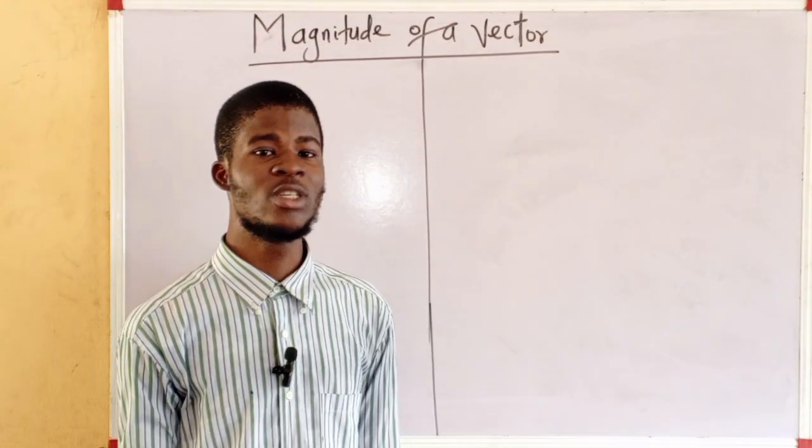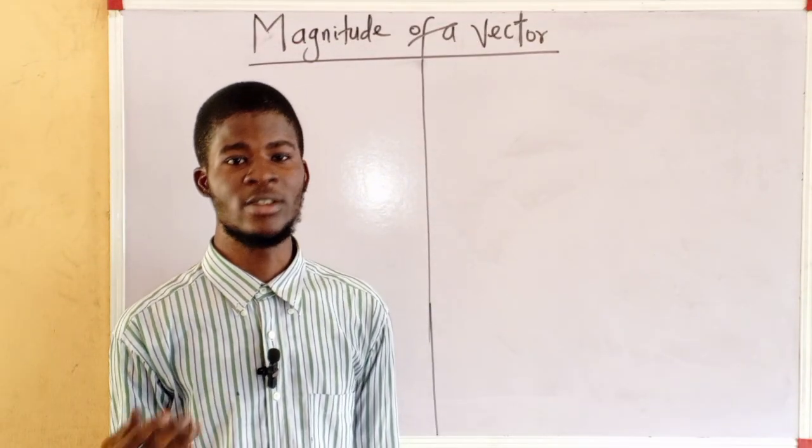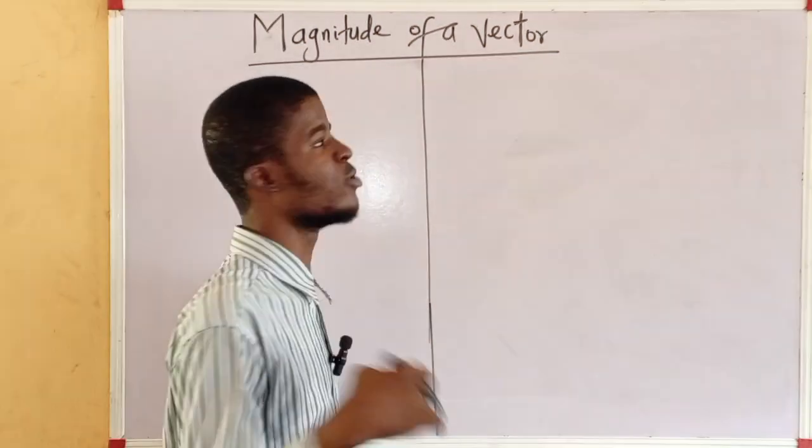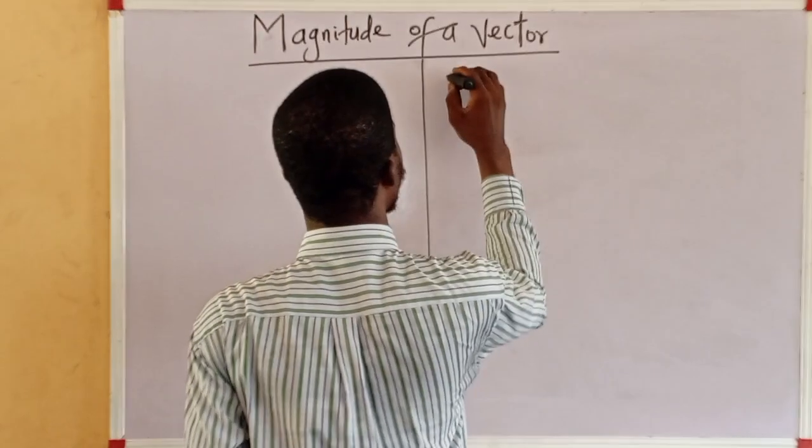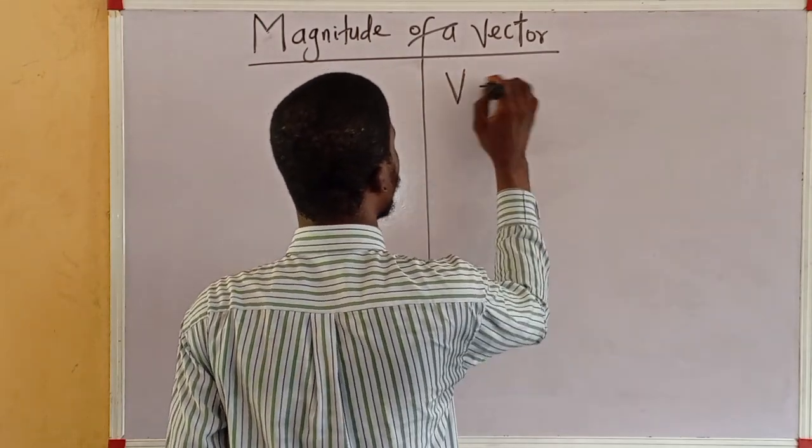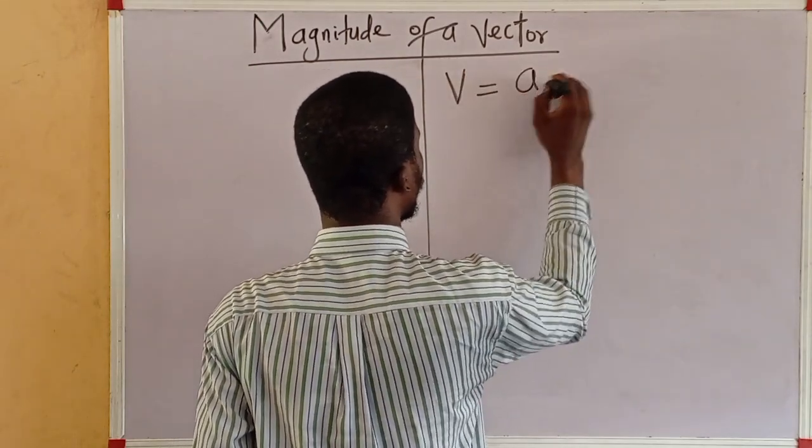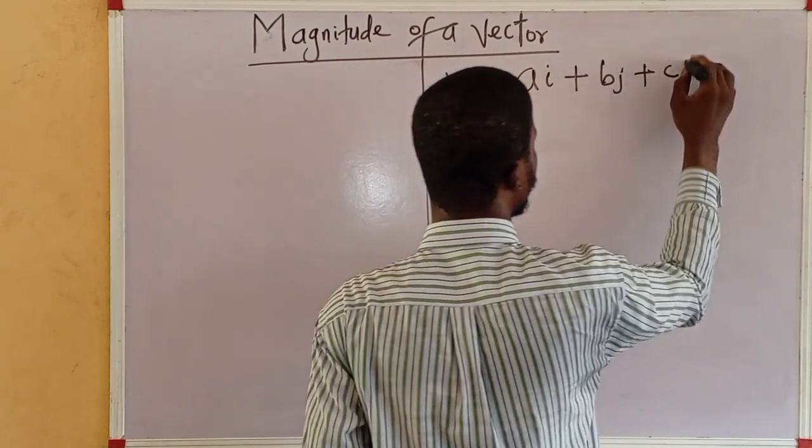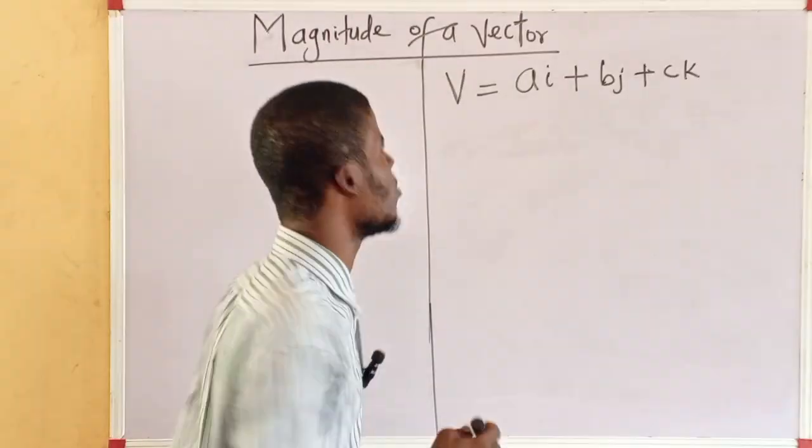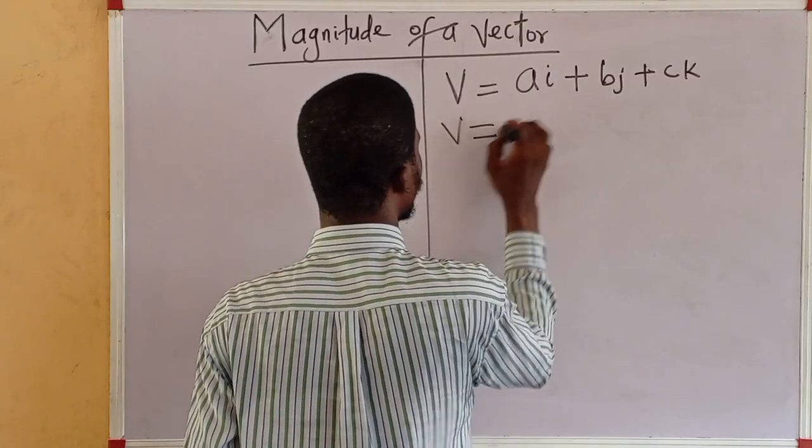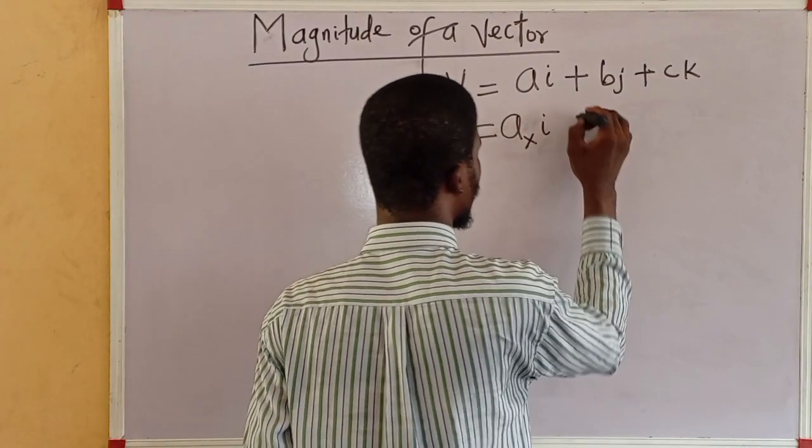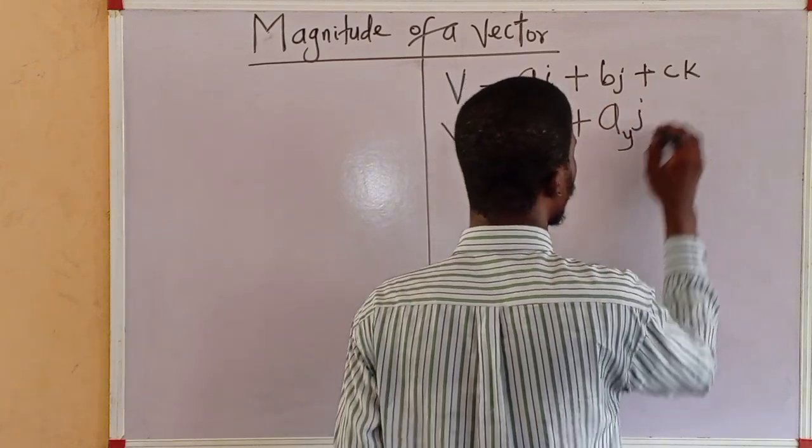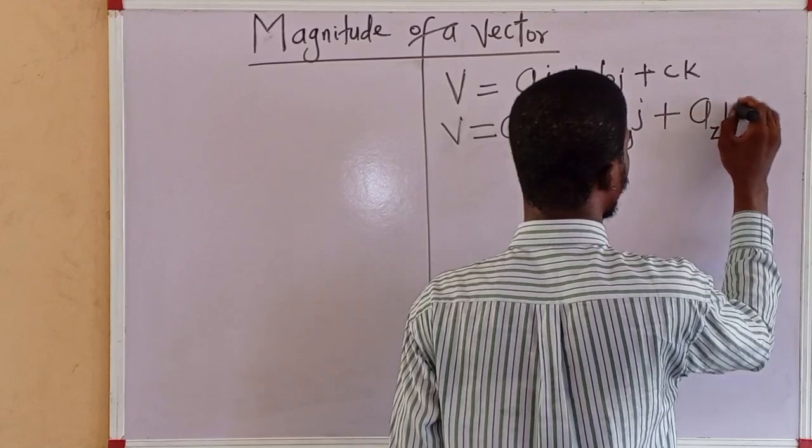We can have a vector in two dimension and in three dimension as well. So for a vector in three dimension, let's start with three dimension. V, this is the vector V, equal to ai + bj + ck. I can write it in this form also. V equal to a sub x i plus a sub y j plus a sub z k.